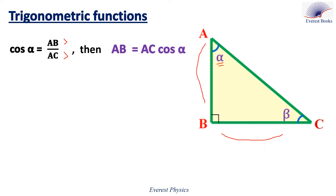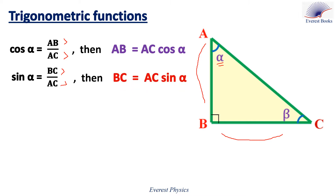Let's move to sine alpha. Sine alpha equals the opposite side, which is BC, over the hypotenuse side, which is AC. Then BC equals AC sine alpha.